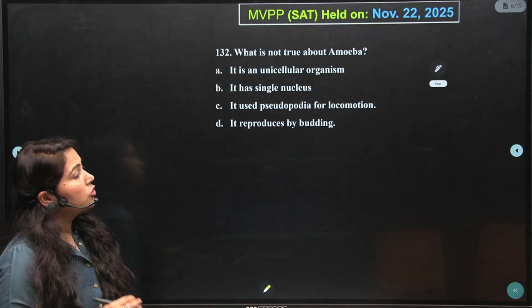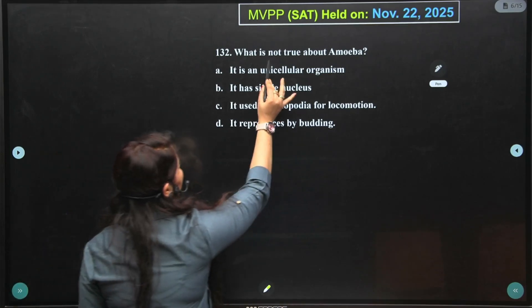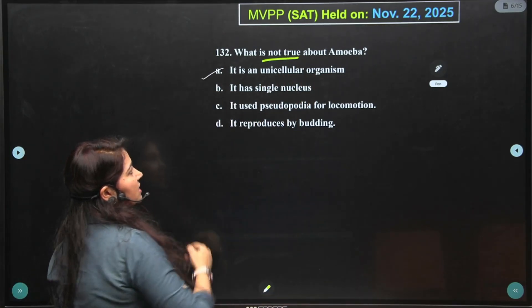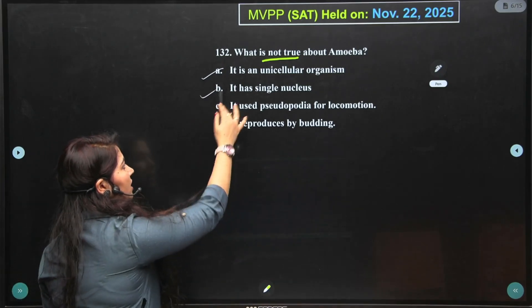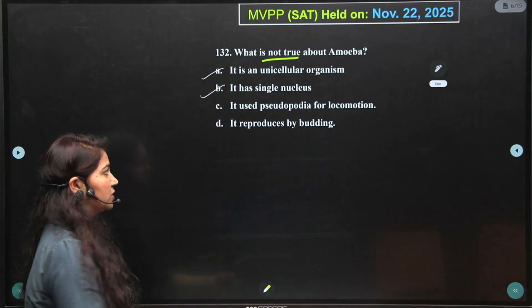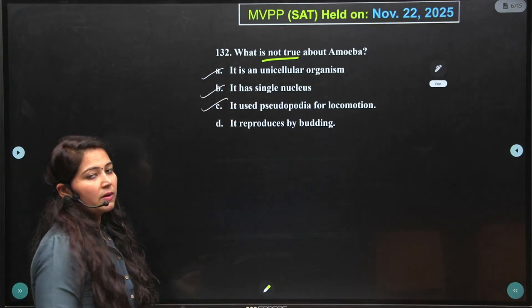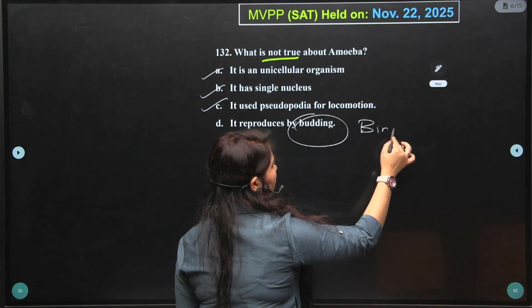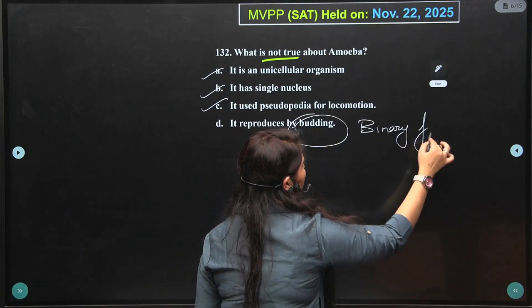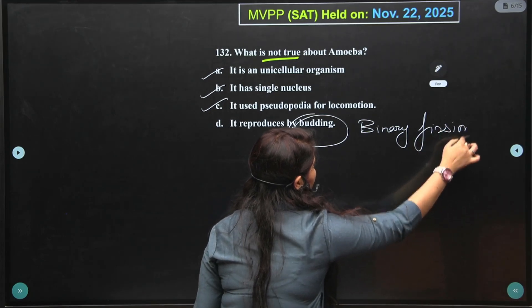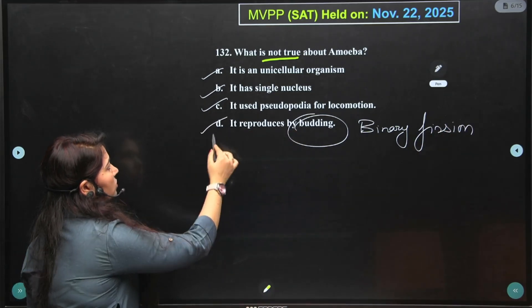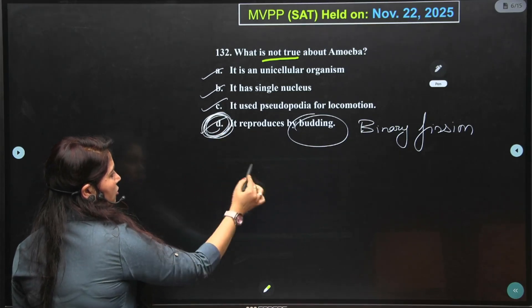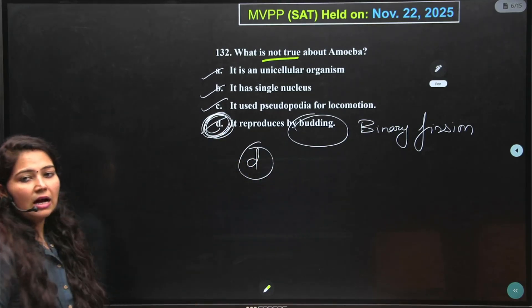Question 132: What is not true? Amoeba is unicellular — correct. It has a single nucleus — correct. It has pseudopodia for locomotion — correct. It reproduces by budding — no, this is false. Amoeba reproduces asexually by binary fission. So the incorrect option, option D, is the answer.